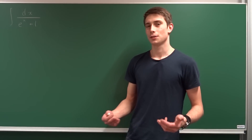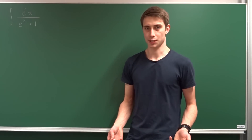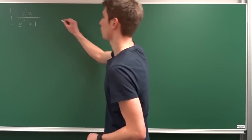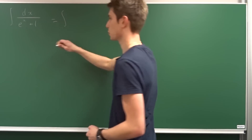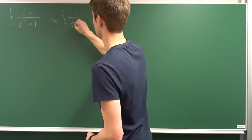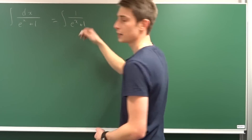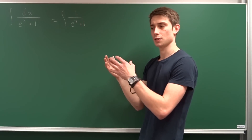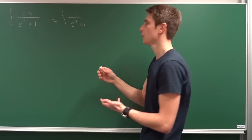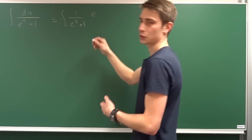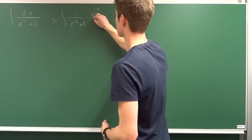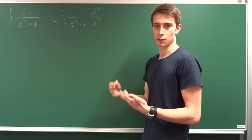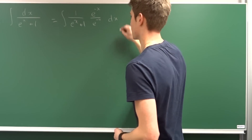The first method is pretty simple. We are going to multiply the whole expression by 1 — specifically e to the minus x over e to the minus x. So the integral is equal to the integral of 1 over e to the x plus 1, times e to the minus x over e to the minus x, times dx.